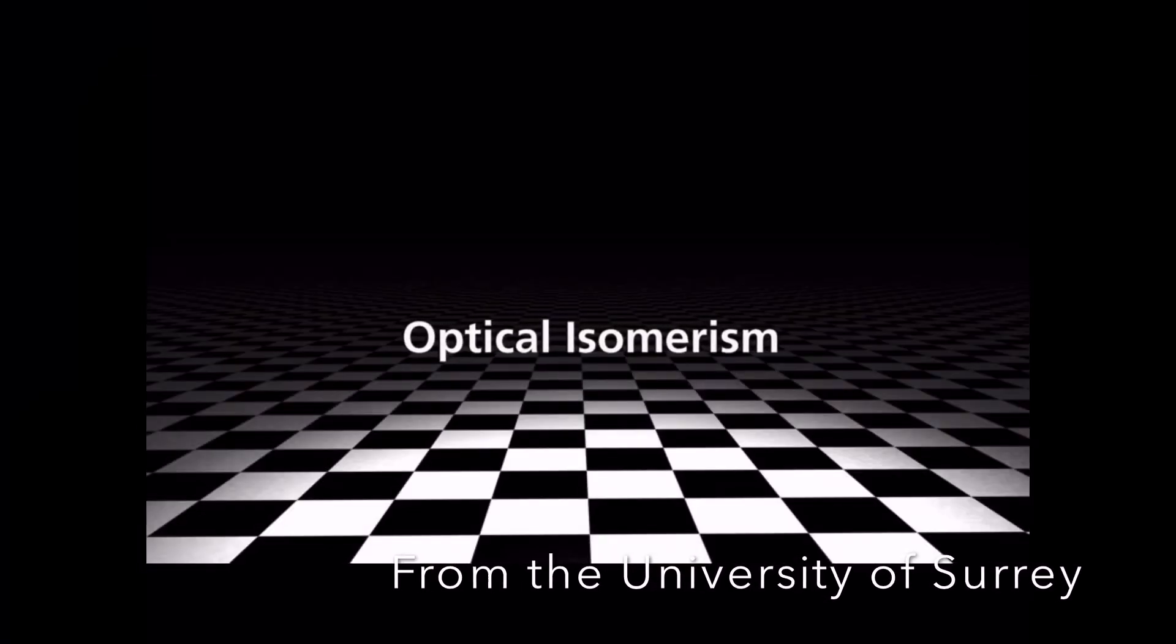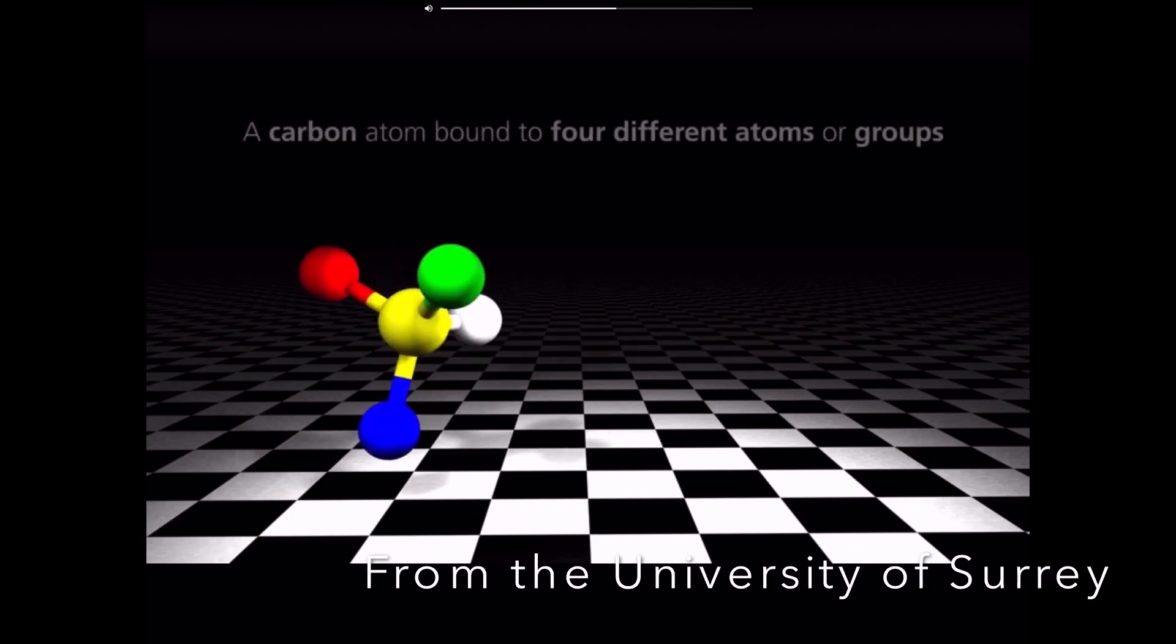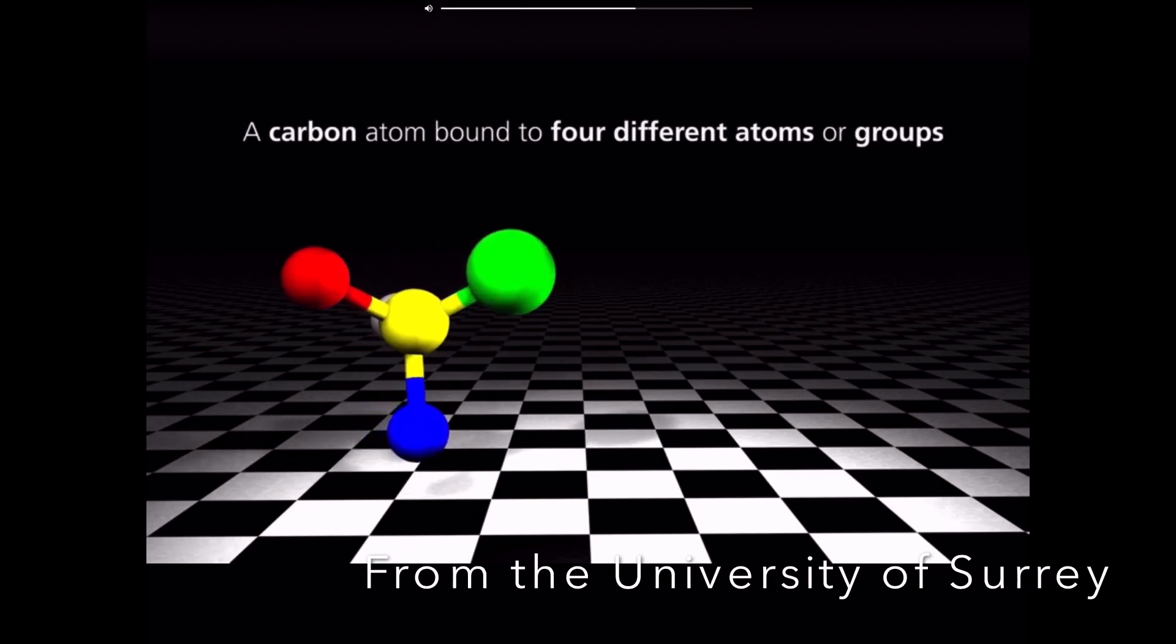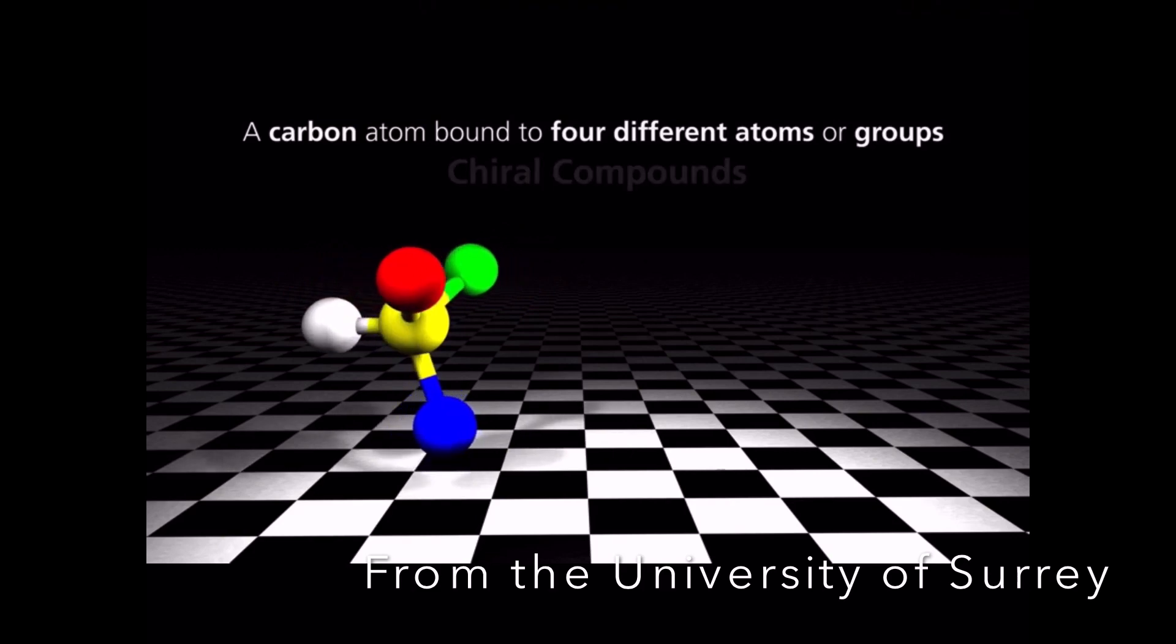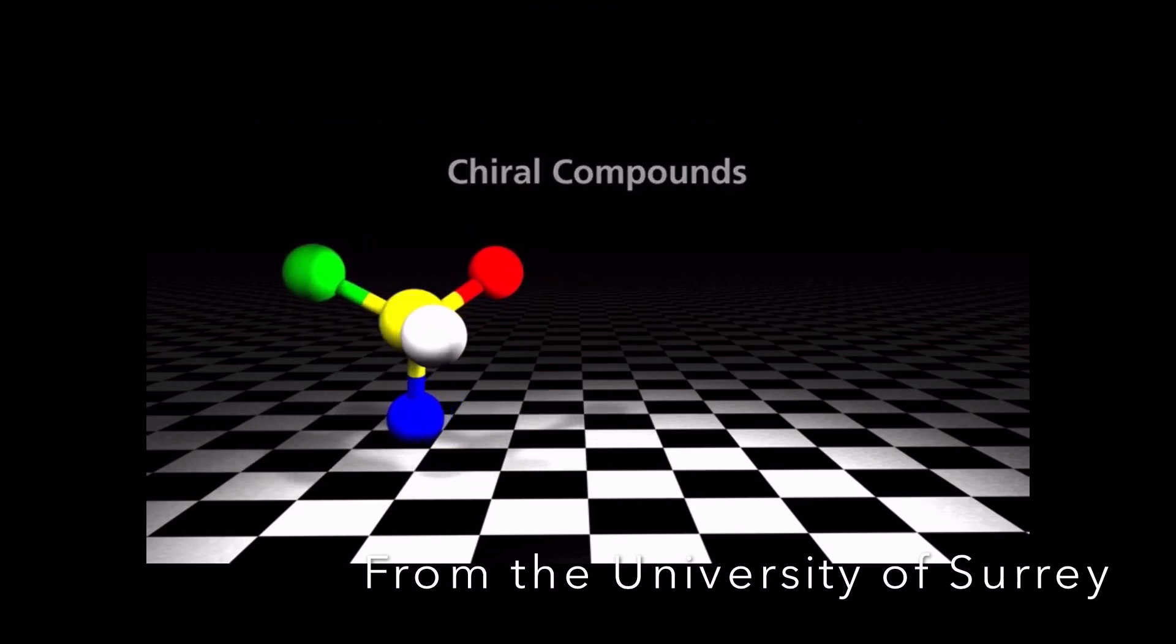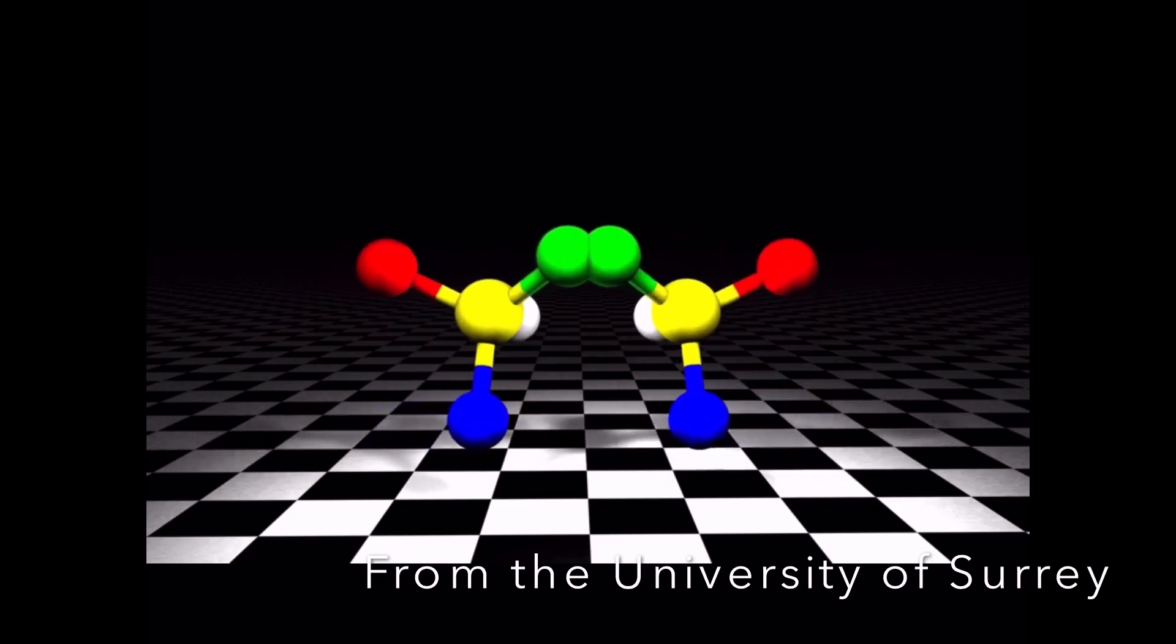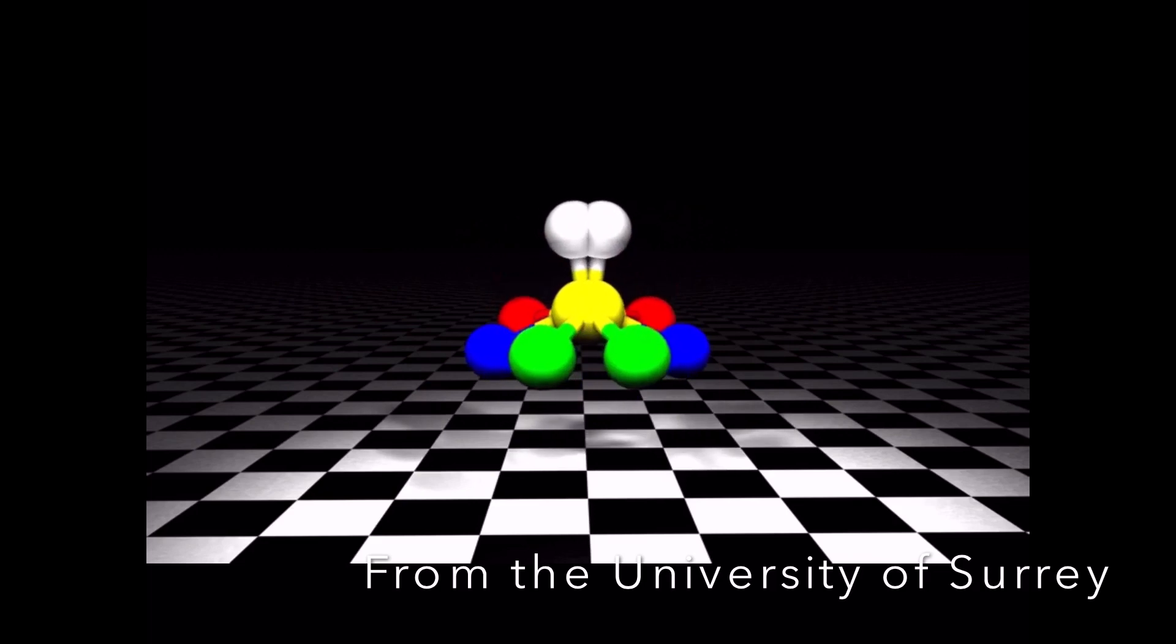Optical isomerism. Organic compounds containing a carbon atom to which four different atoms, or groups of atoms, are attached are called chiral compounds. A mirror image of a chiral compound cannot be superimposed on the original. It is called an optical isomer.